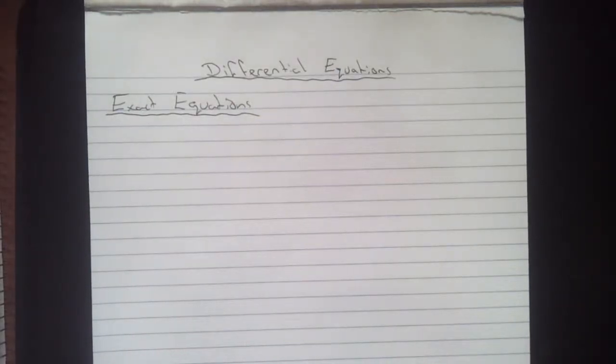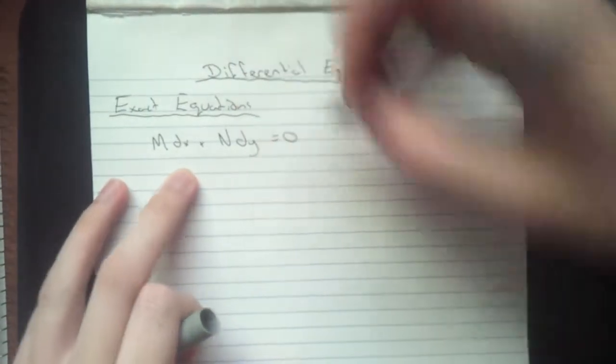Alright, so this is exact equations. An exact equation will be given to you in the form of M dx plus N dy equals zero.